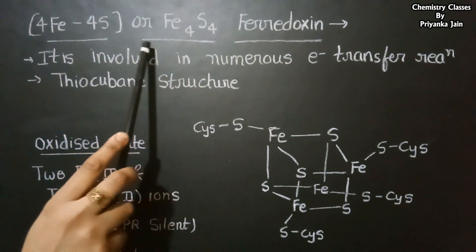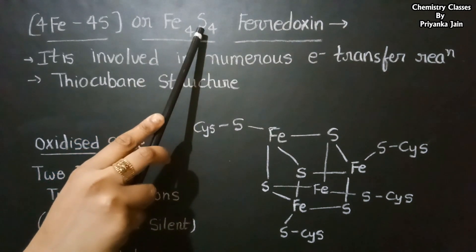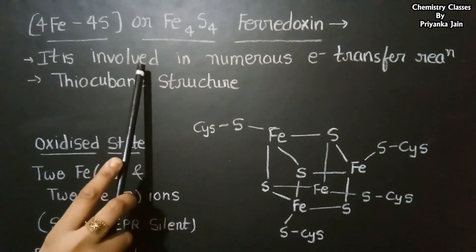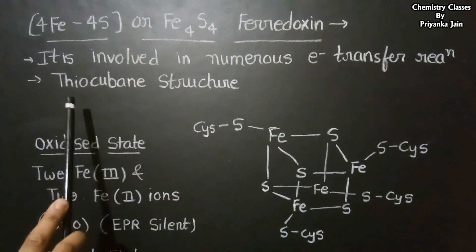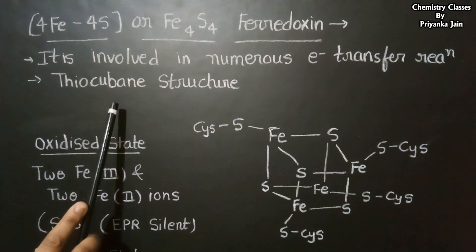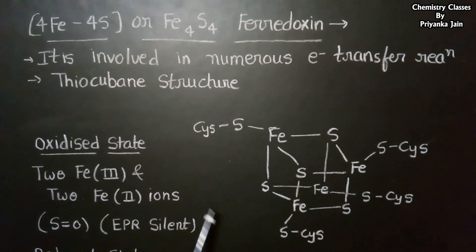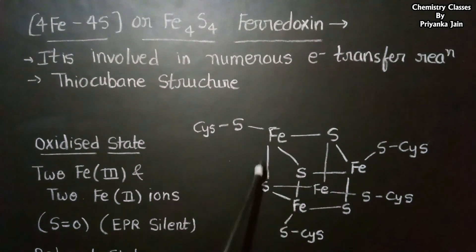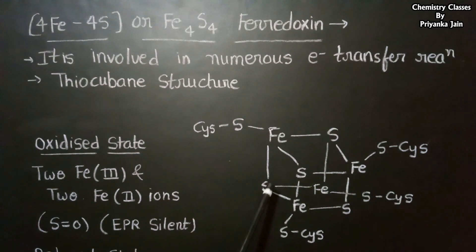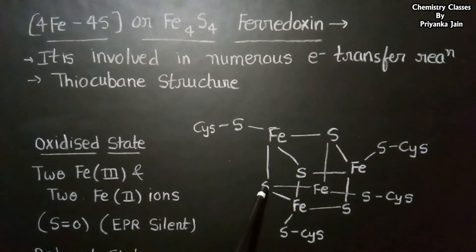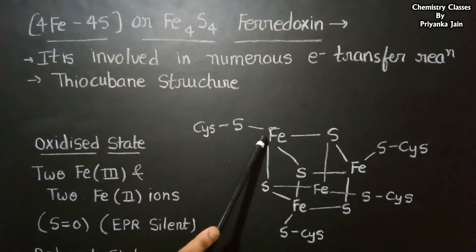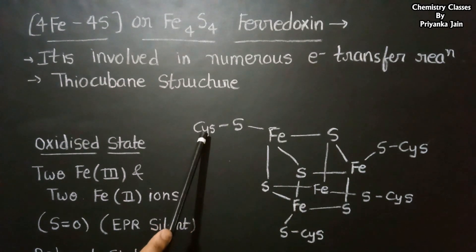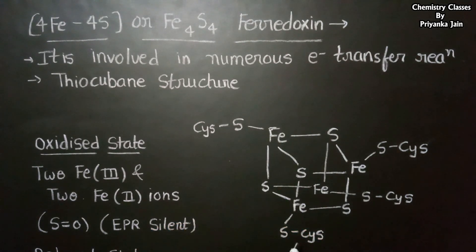The most important type is the 4Fe4S ferredoxin: there are four iron atoms and four acid-labile sulfides. This type of ferredoxin is involved in numerous electron transfer reactions and has a thiocubane structure. In the cluster, the four iron atoms occupy alternating corners of a cube and the remaining corners are occupied by the four acid-labile inorganic sulfide ions. Each iron is also linked to a sulfur atom from a cysteine residue — four different cysteine sulfurs in total.